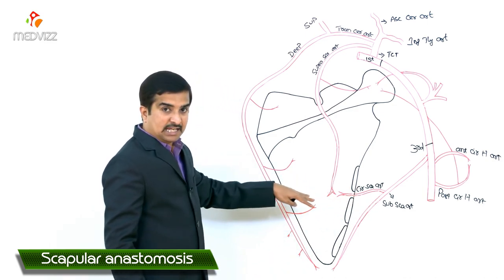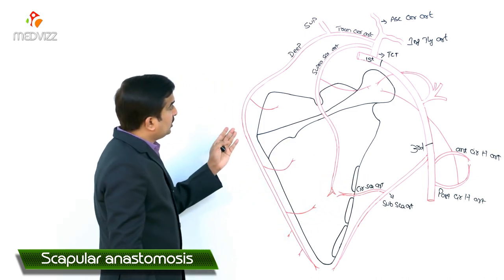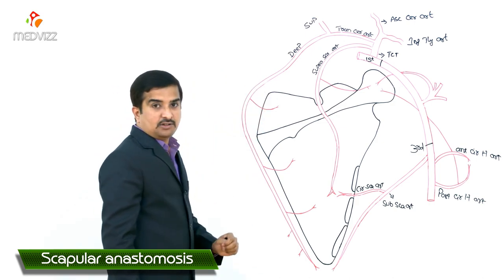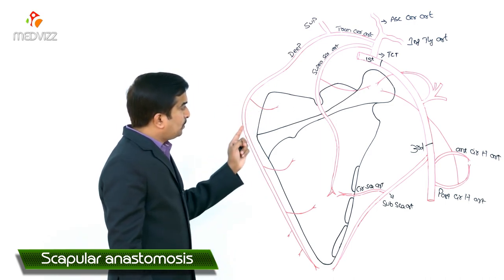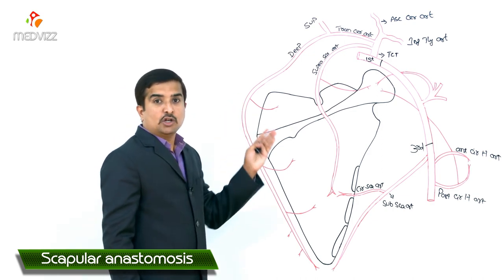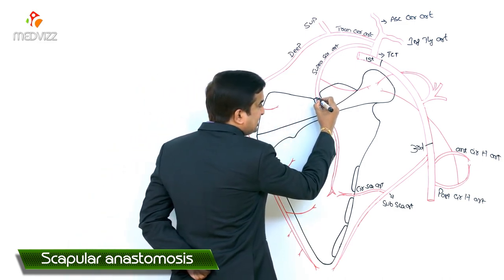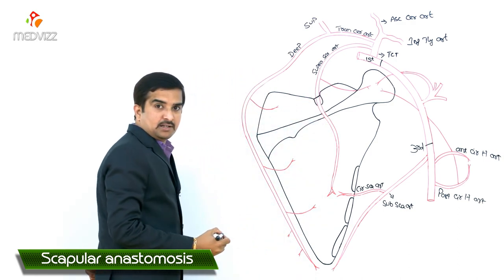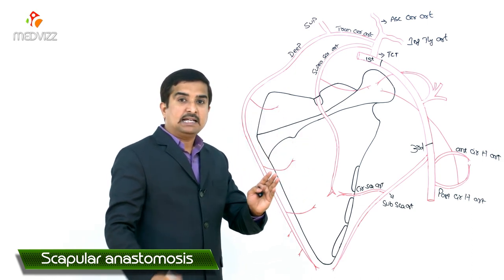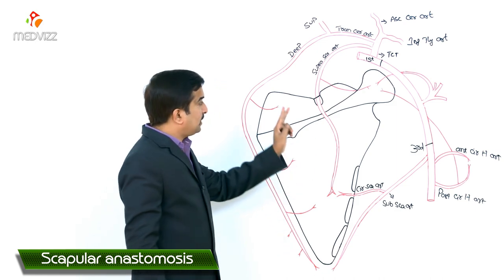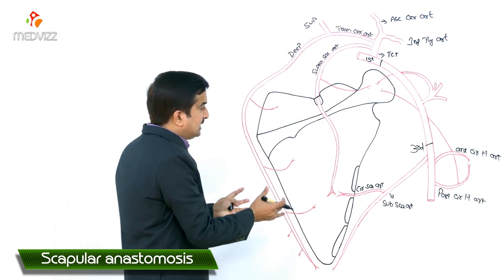The subscapular artery gives off a branch called the circumflex scapular artery, which reaches the body of the scapula at the infraspinous fossa along the lateral border of the scapula. The deep branch of the transverse cervical artery runs along the medial border of the scapula. The suprascapular artery runs superficial to the suprascapular foramen — the suprascapular notch is covered by the suprascapular ligament forming the suprascapular foramen, through which the suprascapular nerve passes, while the suprascapular artery passes above it, down to the infraspinous fossa.